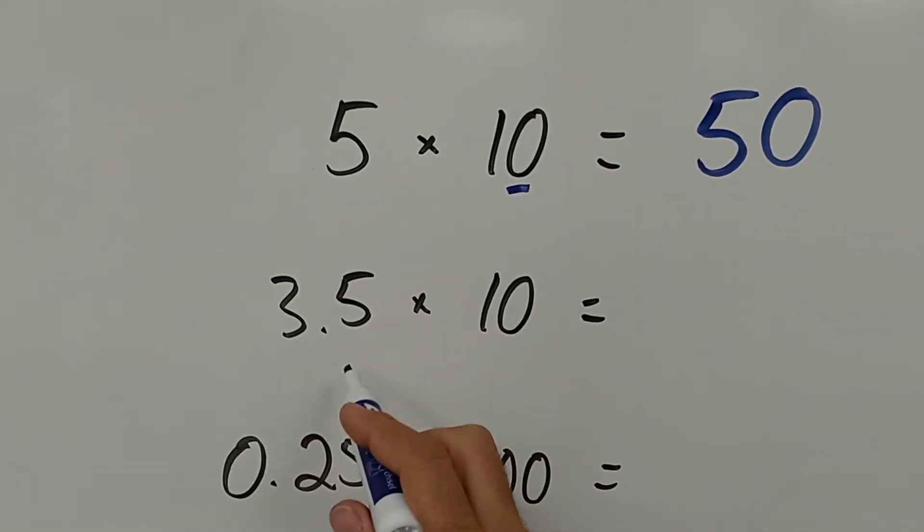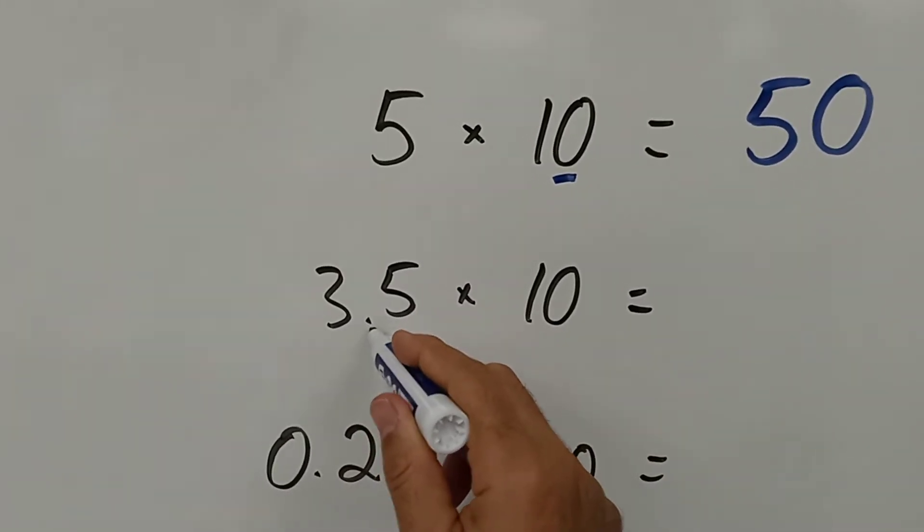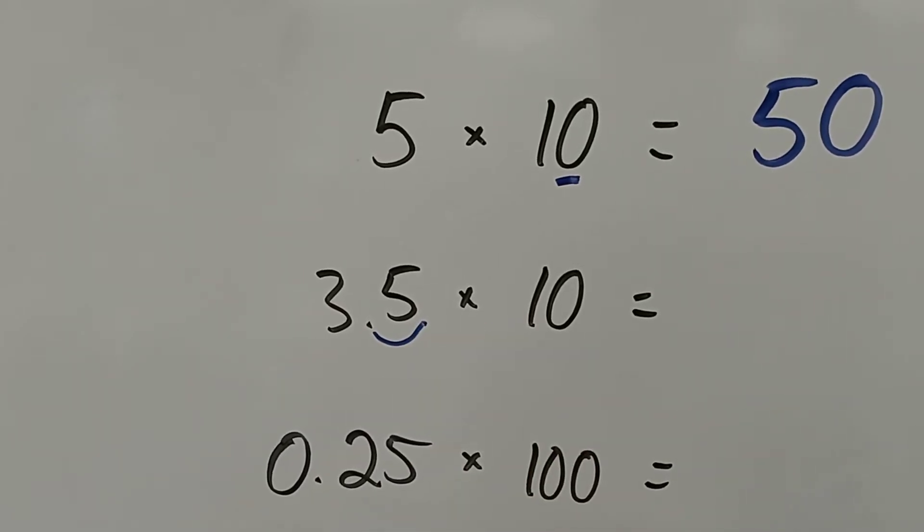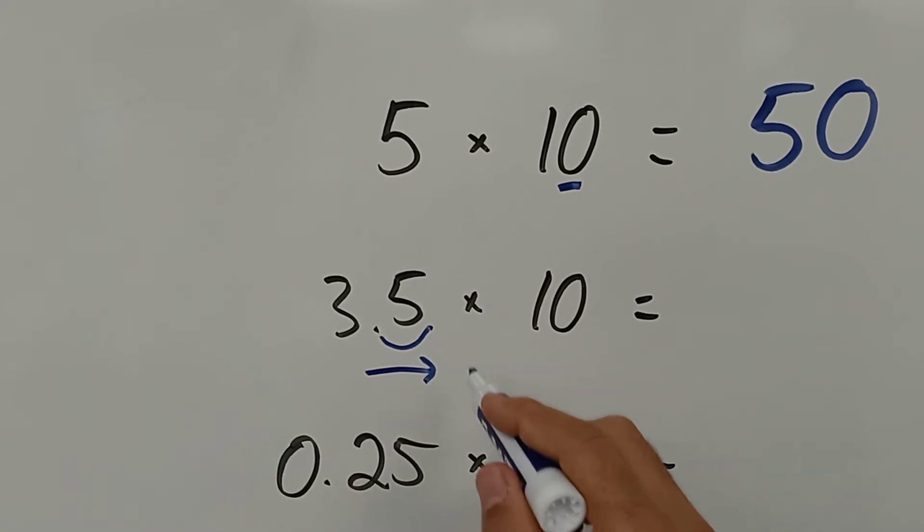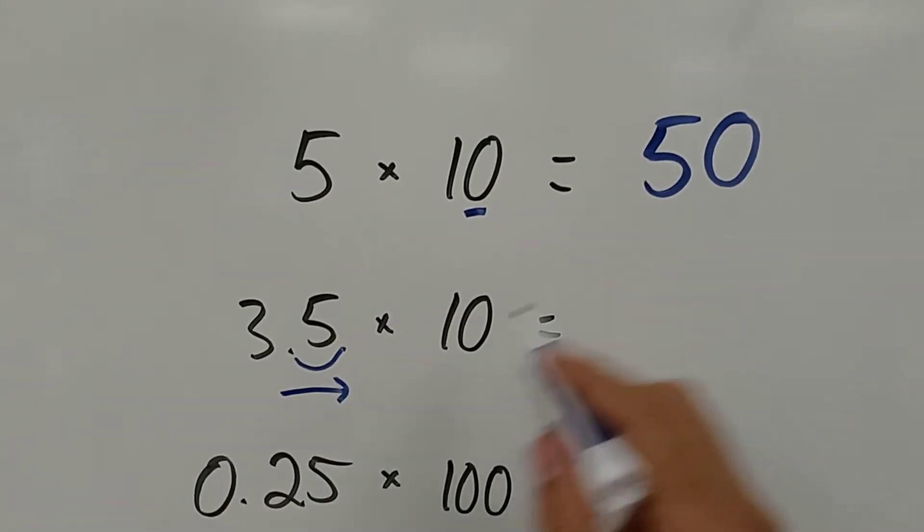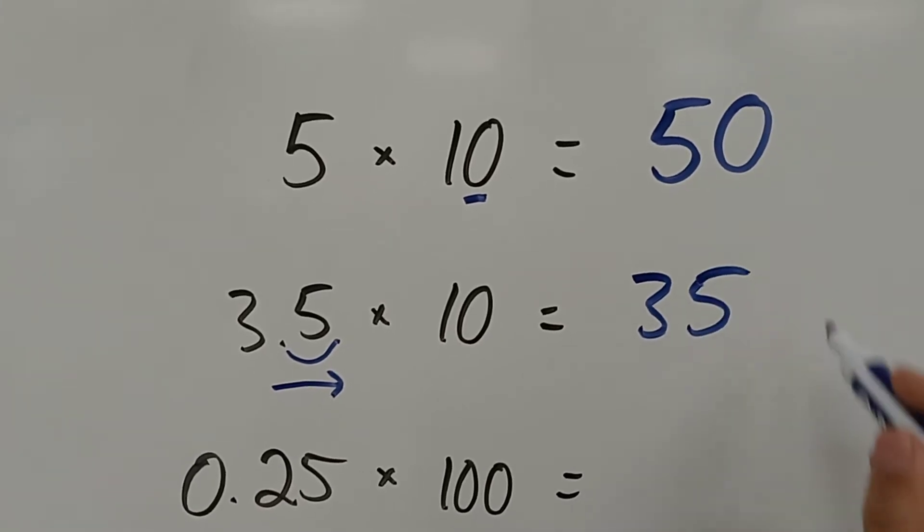Then we have 3.5, a decimal times 10. We just move the decimal point one space to the right, you see, because we are multiplying, we are increasing the number. From 5 it becomes 50, from 3.5 it becomes 35.